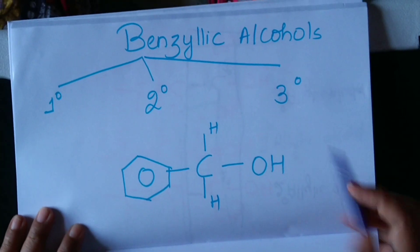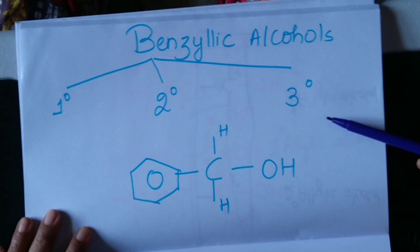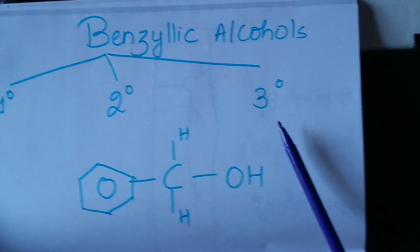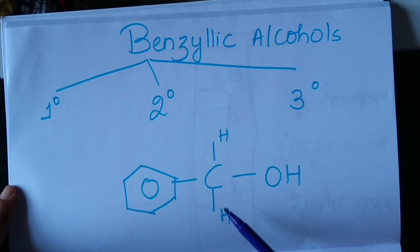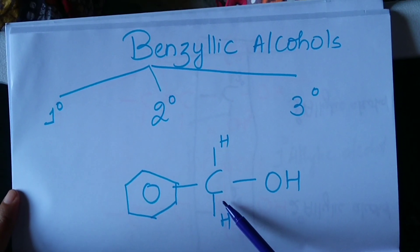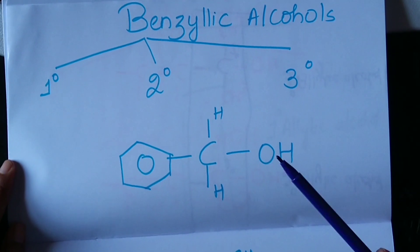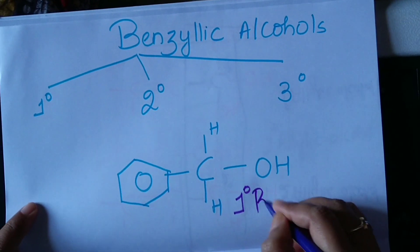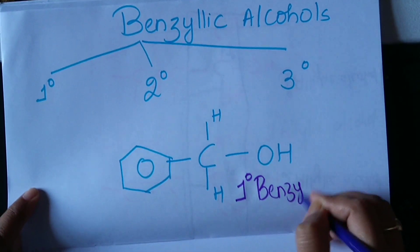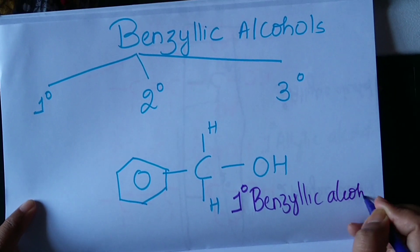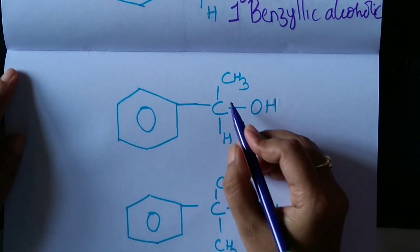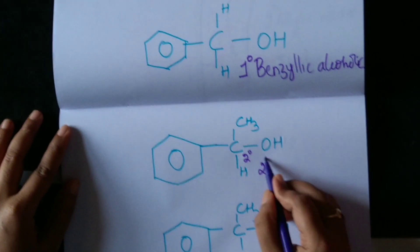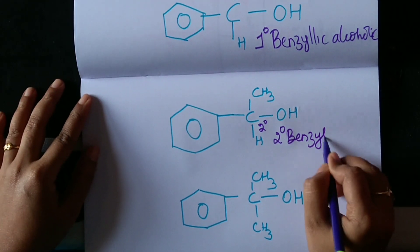On the same lines, benzylic alcohols can also be of three types: primary, secondary, and tertiary. In the first example, the carbon atom is primary, and it is a benzylic alcohol, so the name is primary benzylic alcohol. In the second example, the carbon atom is secondary. Therefore, it is a secondary benzylic alcohol.